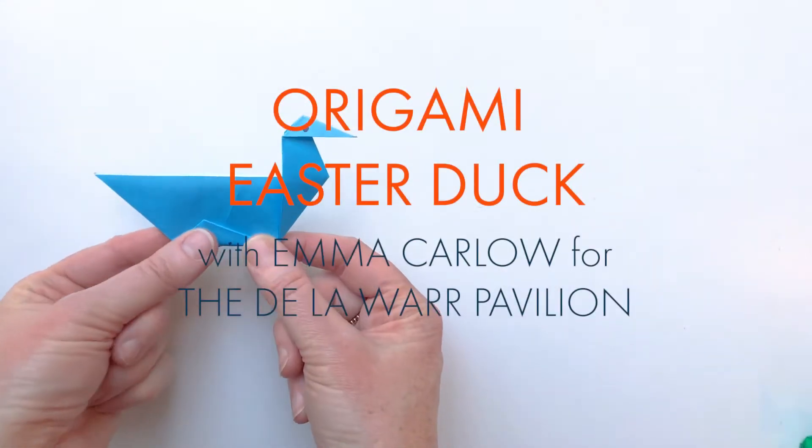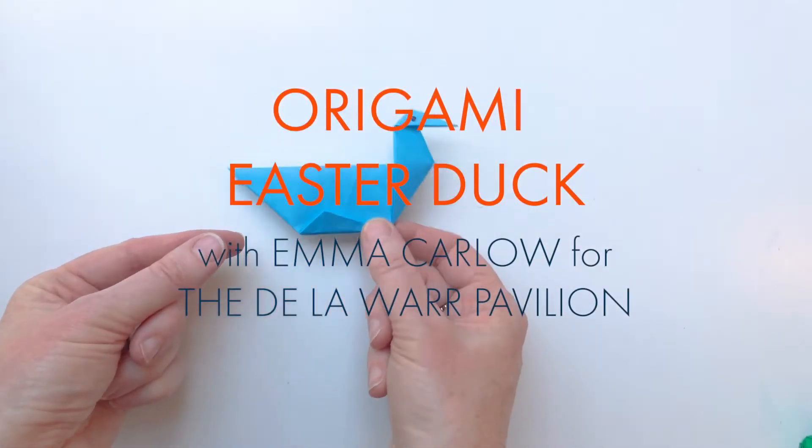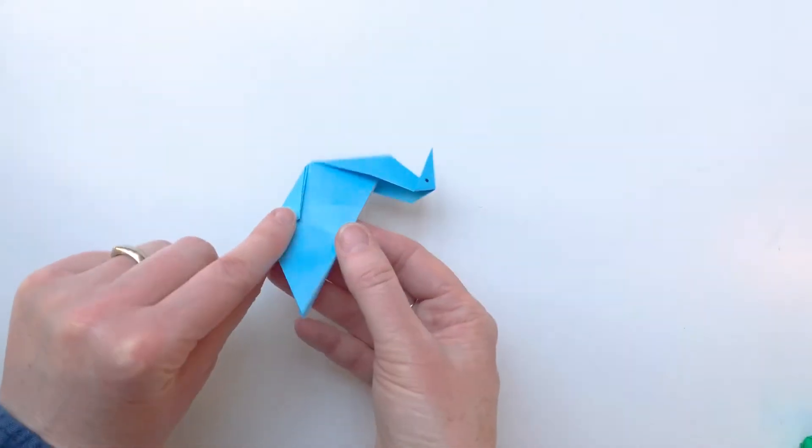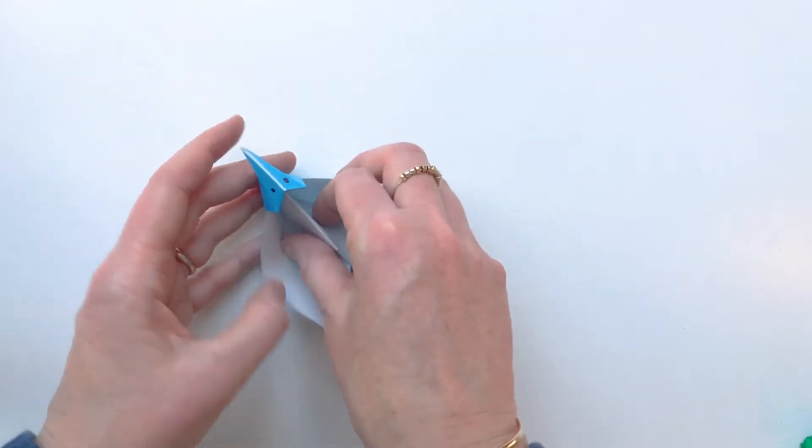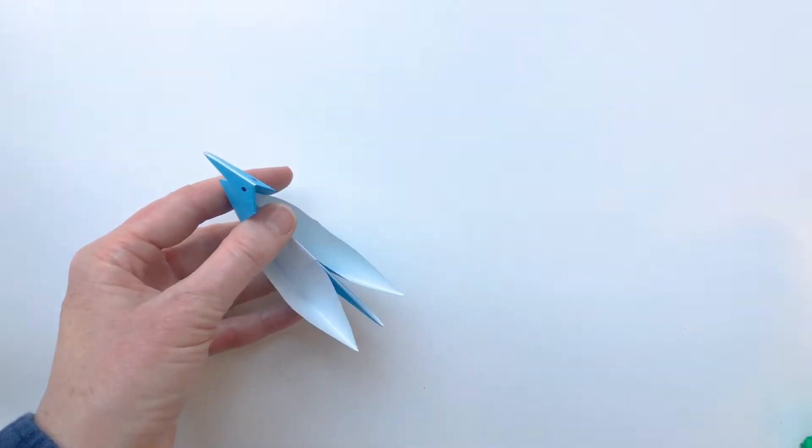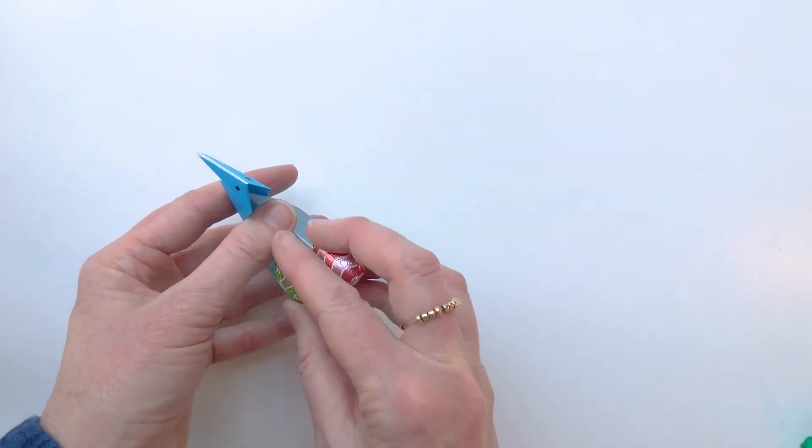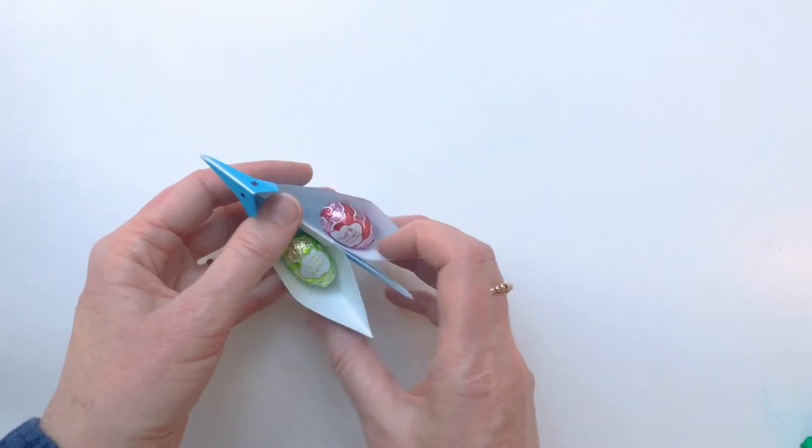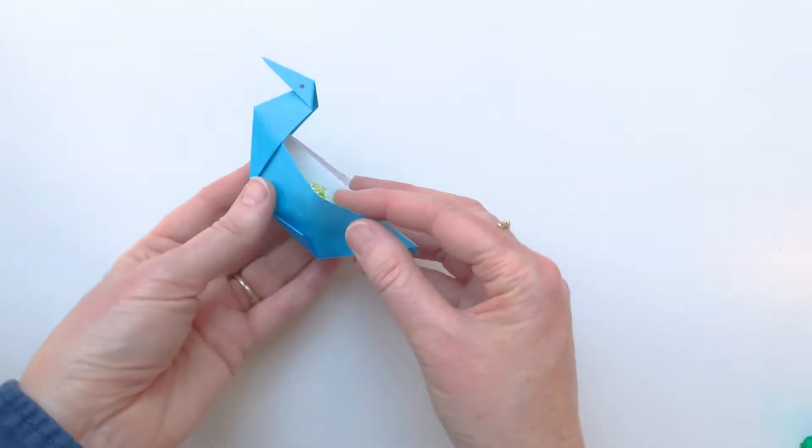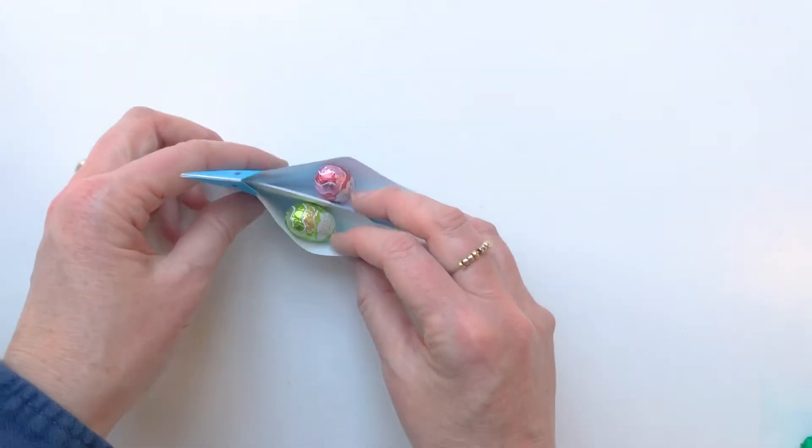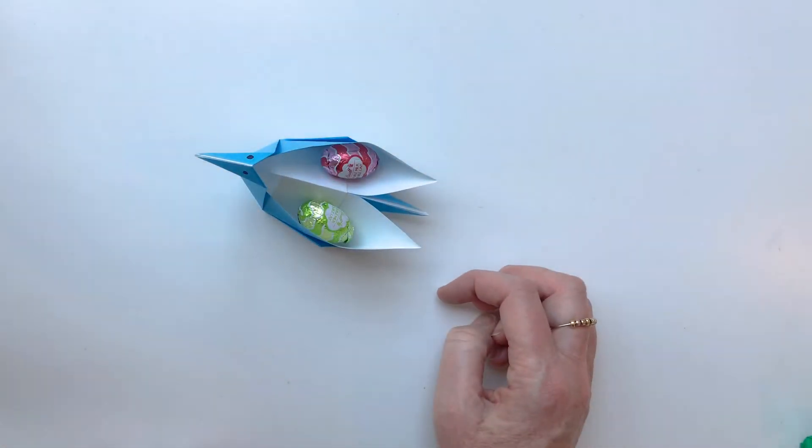Hello, I'm Emma and today I'm going to show you how to make this little duck from origami paper. He holds two little chocolate eggs or anything else that you might want to. So there's an aerial view of him and a side view. Perfect Easter egg delivery. And this is how you make him.